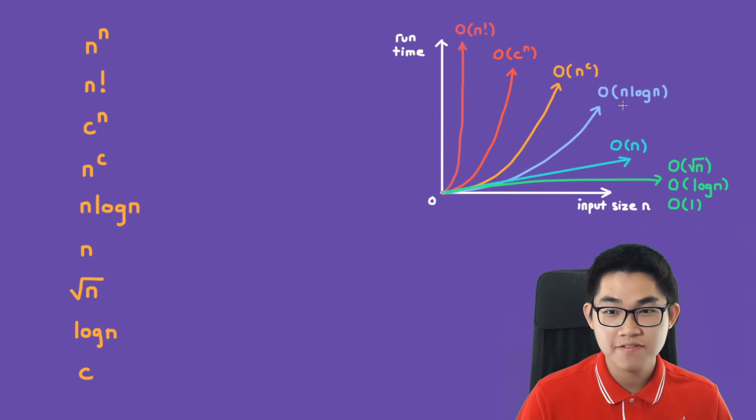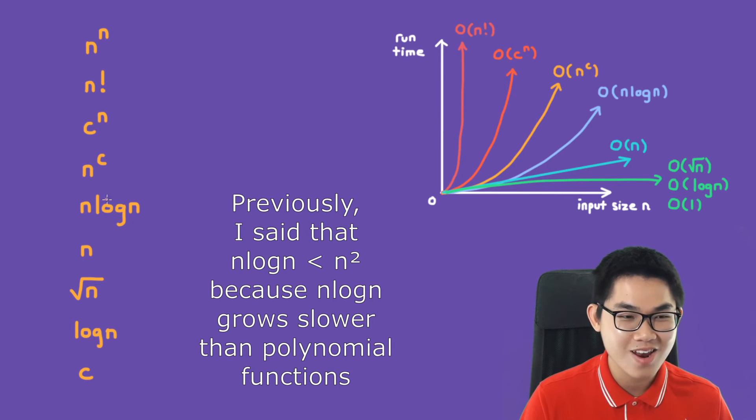If you look at this graph here, all of n log n grows slower than n to the power of C. And this is polynomial, such as n to the power of 2, n to the power of 3, and so on. Just remember that n log n is always smaller than polynomial.